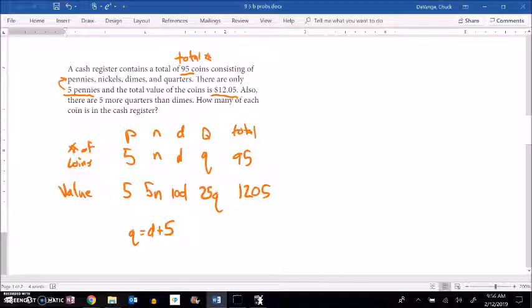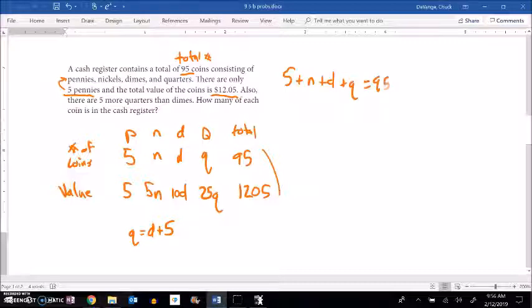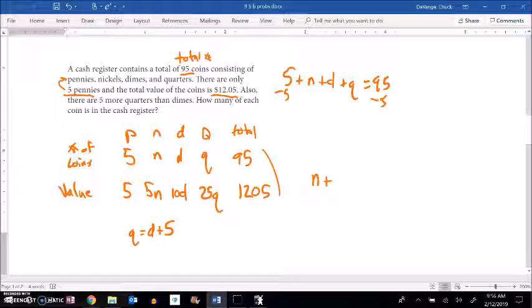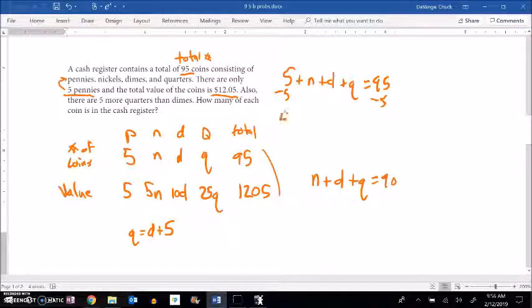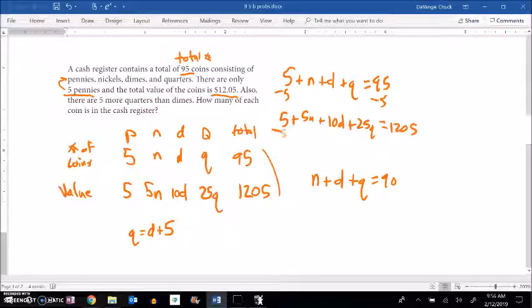So I have a couple pieces here that I can start to do into my system. And let me start to write my system, and you might skip some of these steps, but I want to be explicit. So notice here I can subtract 5 right away. So I know that n + d + q = 90.